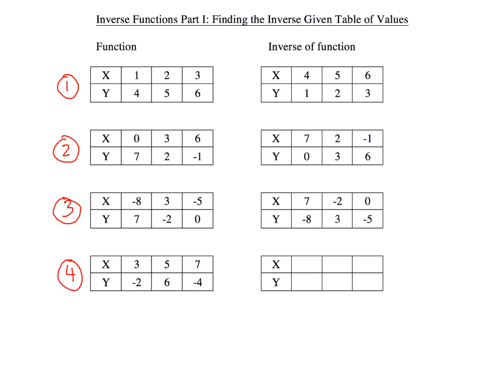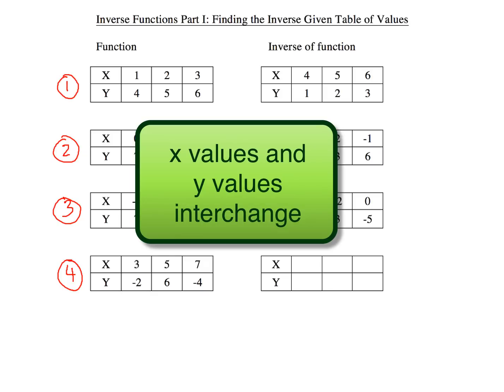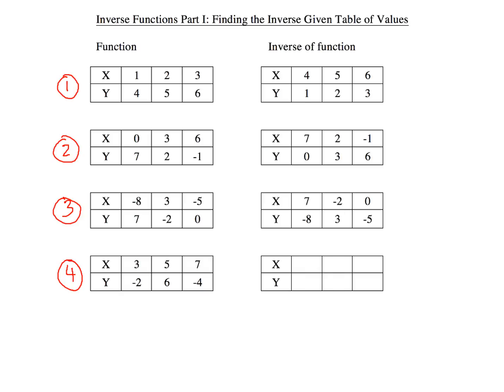So for example, number 1, we've got 1, 2, and 3 as our x's, then 4, 5, 6 for our y's. Notice the inverse function. You merely switch the x and y values to come up with the inverse function's table of values. Same thing for number 2, and likewise for number 3.